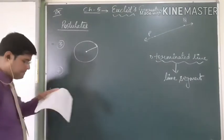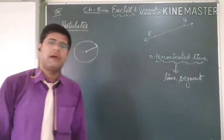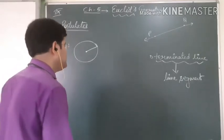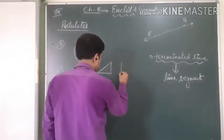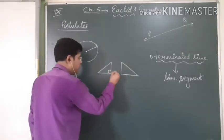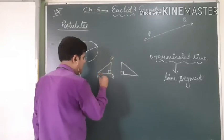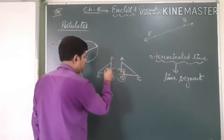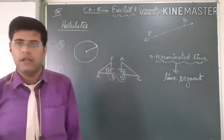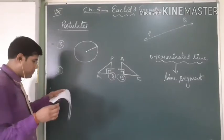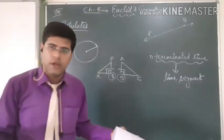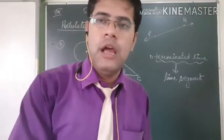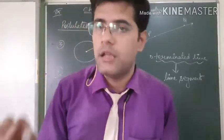The fourth postulate: all right angles are equal to one another. We already know a right angle is 90 degrees, so why this property? It is used to refer to the RHS property of congruency. When we say angle Q equals angle H equals 90 degrees, we use this postulate. If two figures each have a right angle, both right angles are equal.